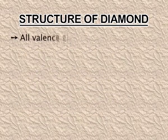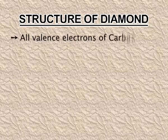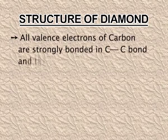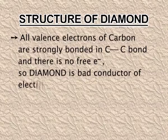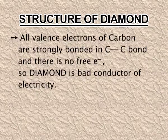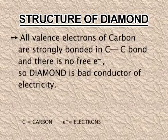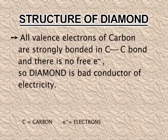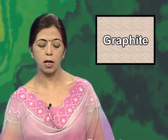Due to the strong covalent bonds, diamond is extremely hard and has a very high melting point. All the valence electrons in carbon are strongly bonded via carbon-carbon bonds and there is no free electron. Since there is no free electron, diamond is a bad conductor of electricity.